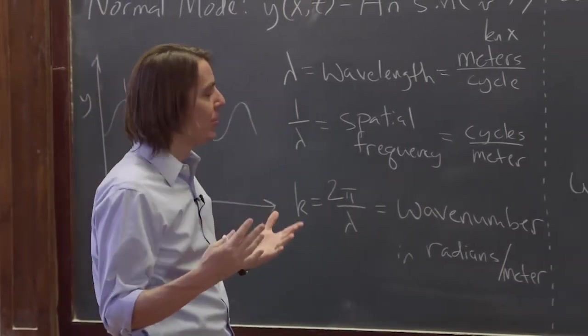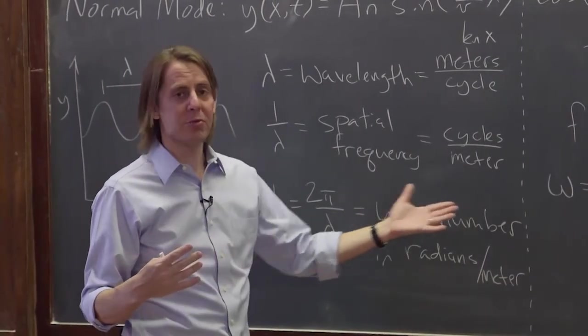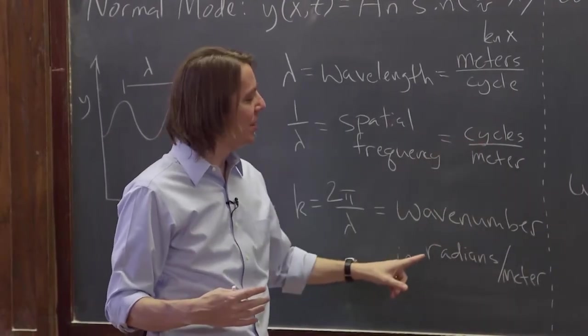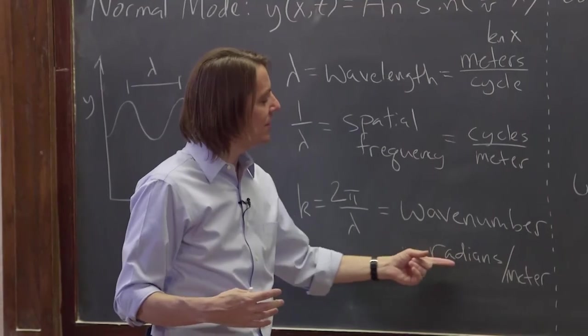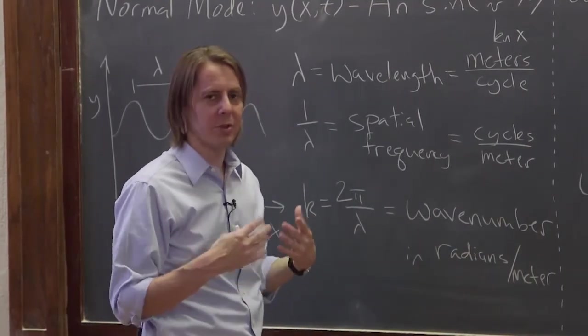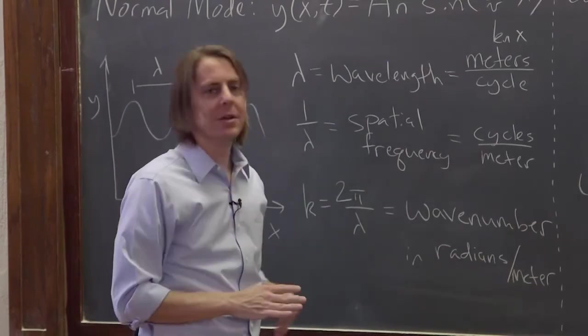And the name, wave number, is because it's literally the number of waves per meter. How many waves? This many waves. Cycles would literally be counting the waves. Radians per meter is counting the radians. Well, the radians per meter. But that's what it means by wave number. It is actually the number of waves that you can fit in this amount of space.